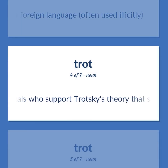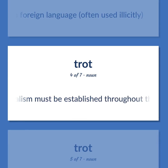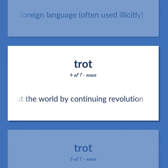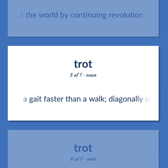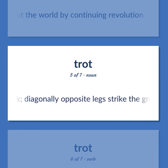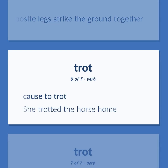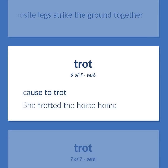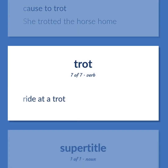Trotskyism: Radicals who support Trotsky's theory that socialism must be established throughout the world by continuing revolution. Trot: A gait faster than a walk — diagonally opposite legs strike the ground together. Cause to trot — she trotted the horse home. Ride at a trot.